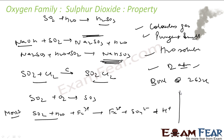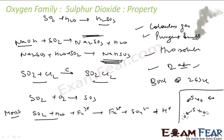If you look at the shape of SO2, it exists in resonance. It has one lone pair on the Sulphur and three lone pairs on each Oxygen. The overall shape of SO2 is angular.